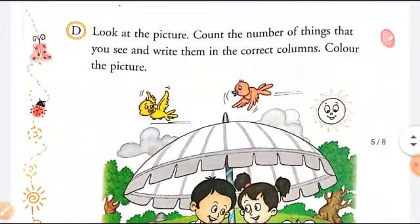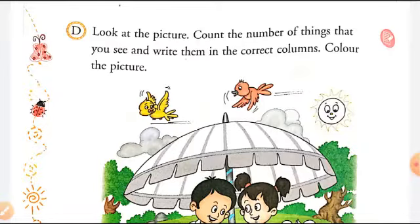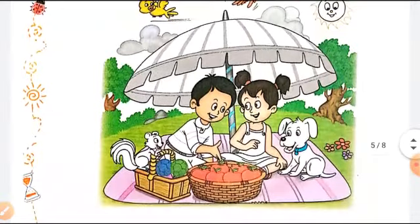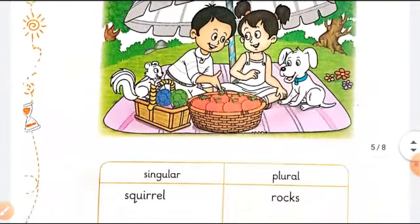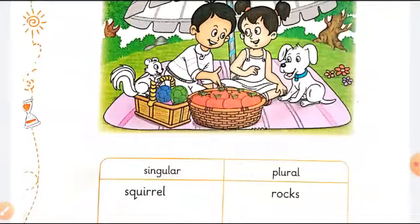In this exercise you have to look at the picture and count the nouns. You have to count the nouns in this picture. Now see, beneath it is written the first noun is squirrel. So how many squirrels are there, children?